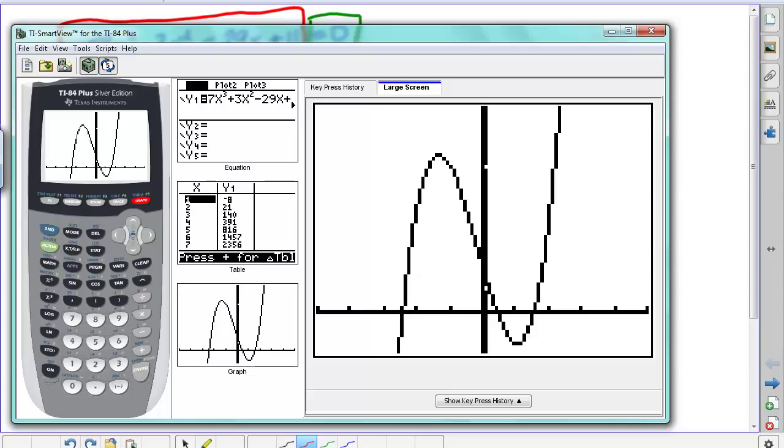But again, nothing really even as far as where those x-intercepts are, so the graph is helpful here in seeing those, but ultimately isn't much help.